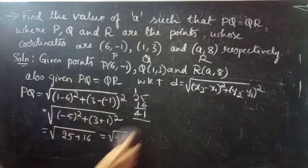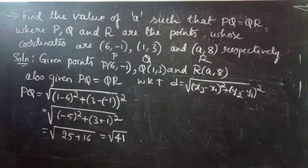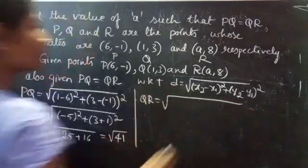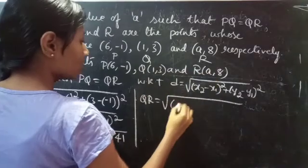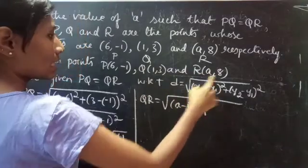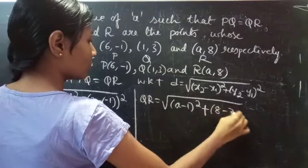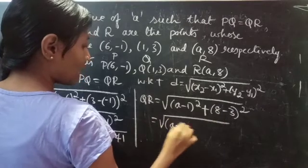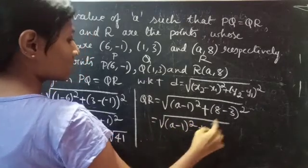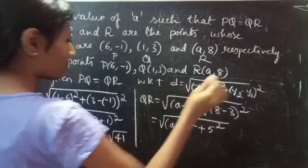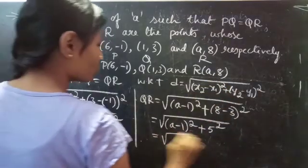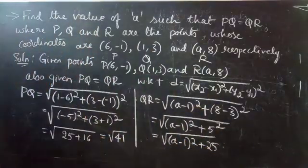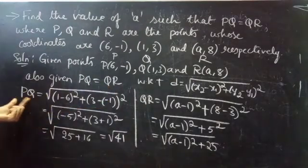Now we will find the distance QR. QR equals √((A−1)² + (8−3)²), which equals √((A−1)² + 5²), so QR = √((A−1)² + 25).